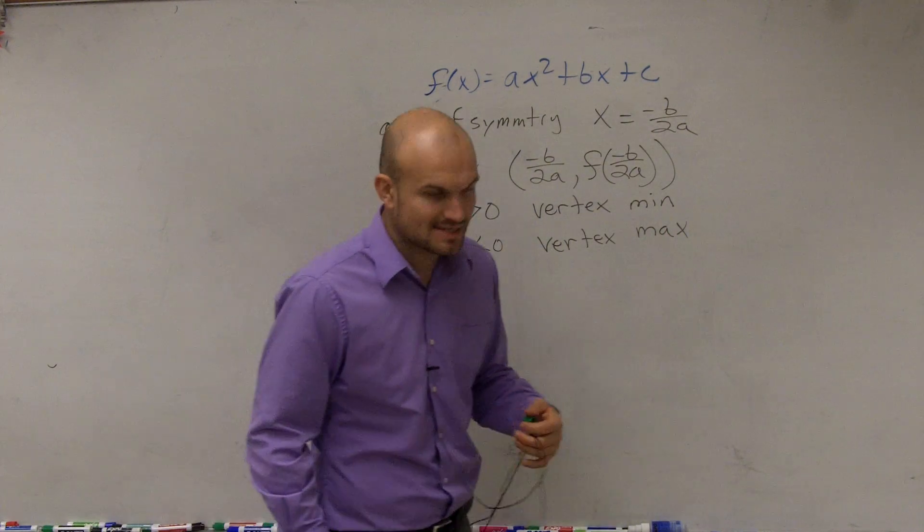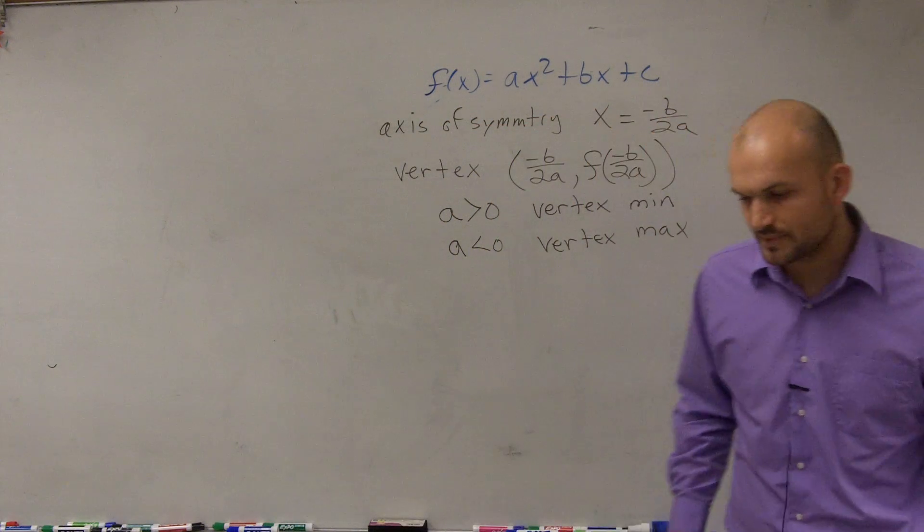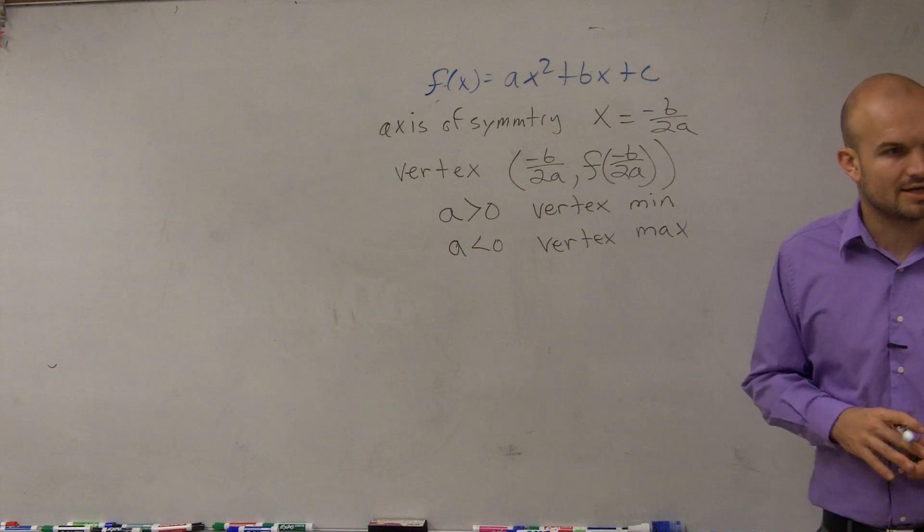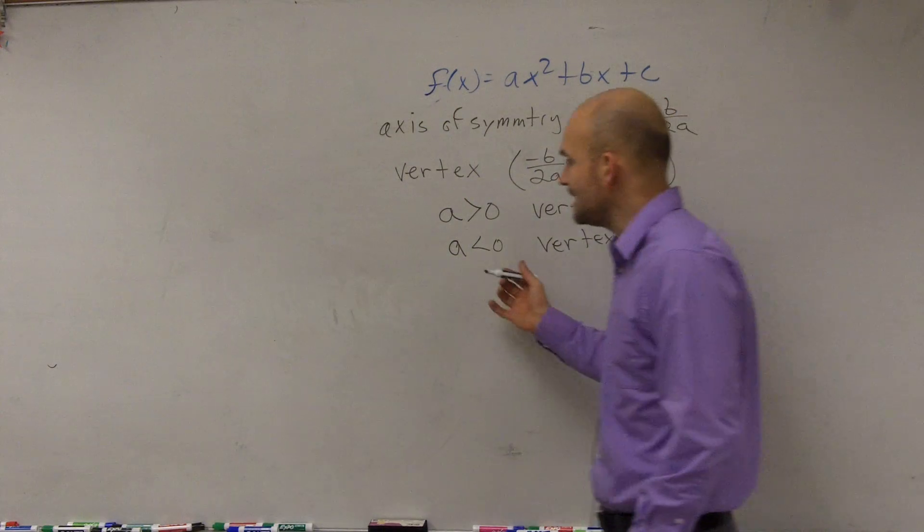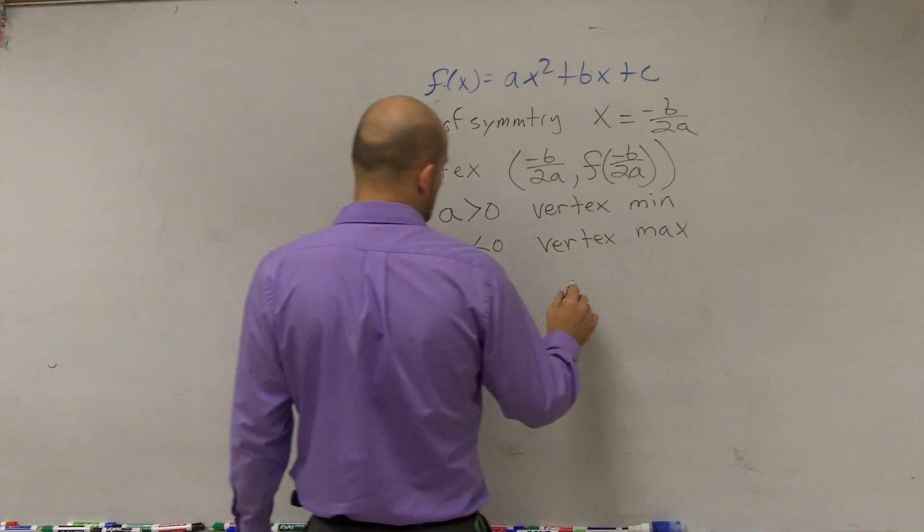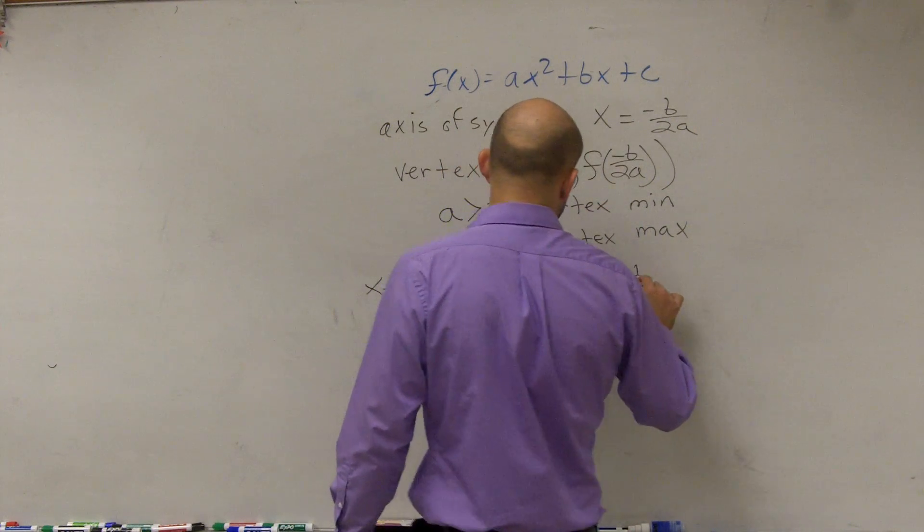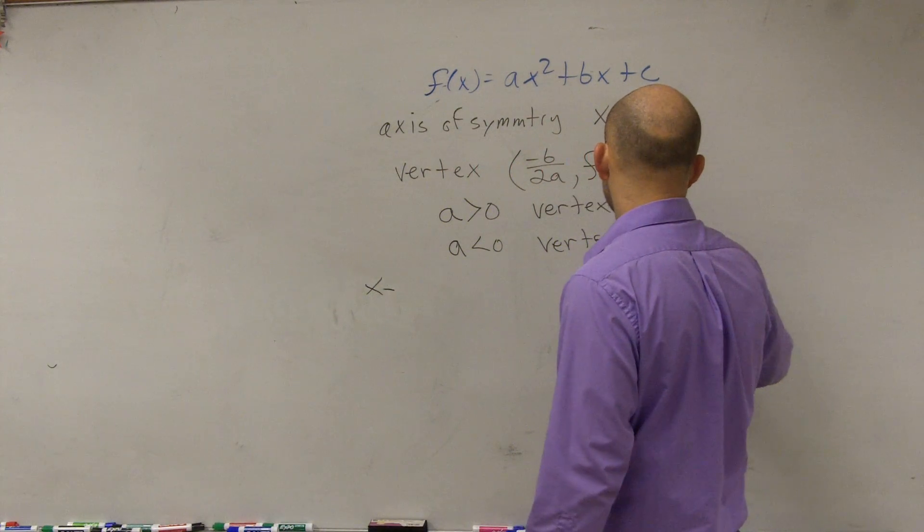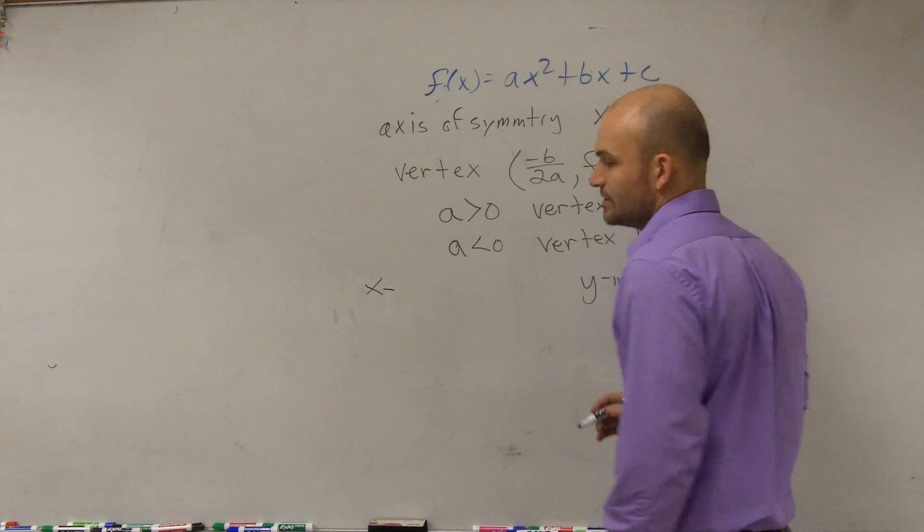Then the last thing we talked about was how to find the x and y-intercepts. So to find the x-intercept, sorry, let's do y-intercept first. To find the y-intercept, all we simply did was say put x equal to 0.